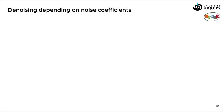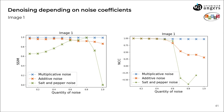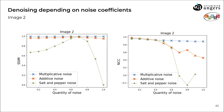Another important parameter to consider when denoising an image is the quantity of noise. We studied the ability of the software to denoise images depending on noise coefficients, for all three different types of noise. For the first image, we plotted the quality metrics depending on the quantity of noise. Looking at the NCC, we see that for both additive and salt and pepper noise, for a quantity of noise bigger than 0.6, the denoising is not efficient anymore. For the second image, the curves have the same shape, and there is also a threshold value around 0.6 for both additive and salt and pepper noise.